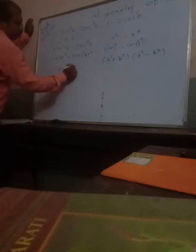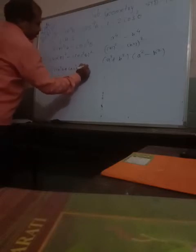We apply the formula A squared minus B squared equals (A plus B)(A minus B). So we split it into (sin²θ + cos²θ)(sin²θ - cos²θ). We can calculate using this A squared minus B squared identity.